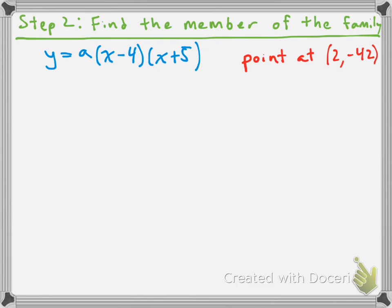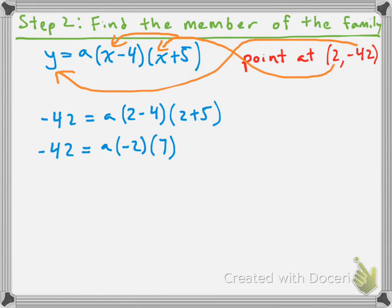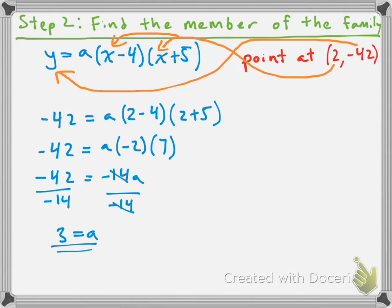We're going to take the equation of the family — y equals a times x minus 4 times x plus 5 — and plug in the x value and y value from the point. So we get negative 42 equals a times (2 minus 4) times (2 plus 5). Simplifying: negative 42 equals a times negative 2 times 7, which gives us negative 42 equals negative 14a. Dividing both sides by negative 14, we get a equals 3.